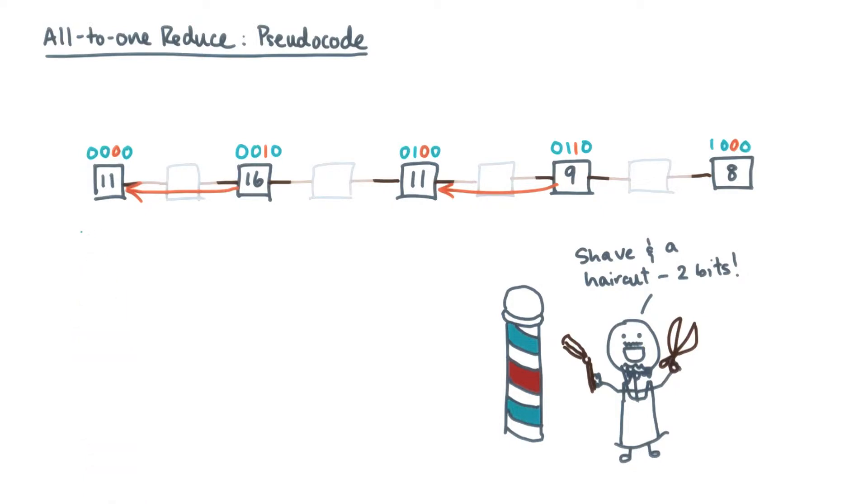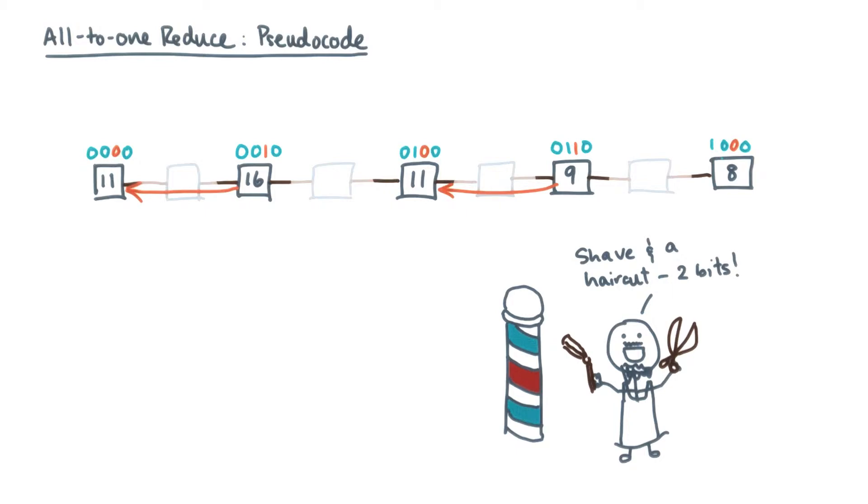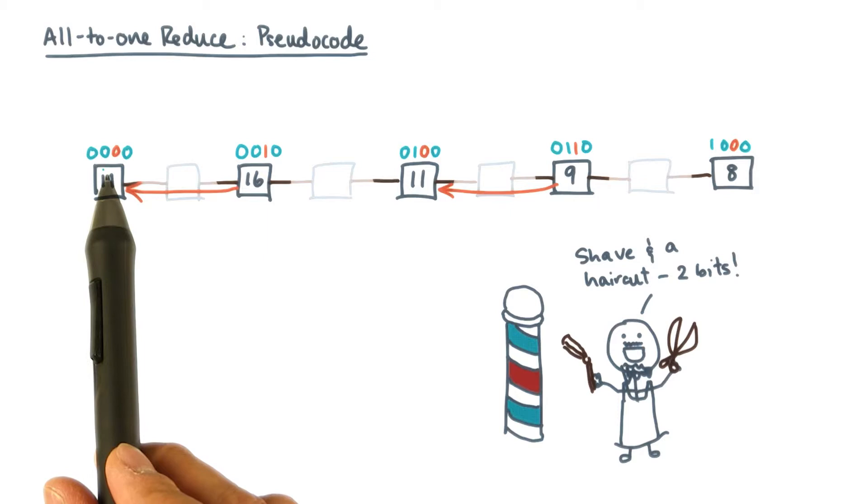Our algorithmic idea was to use a tree-based reduction. The algorithm proceeds in about log p rounds of communication. The rounds iterate over bit positions. In each round, there's a current bit position, processes with a one send to processes with a zero in that bit position.